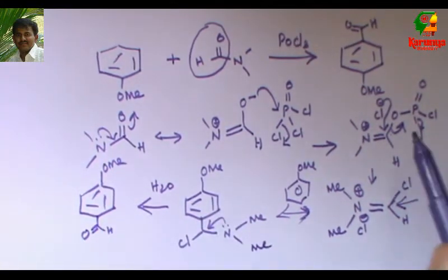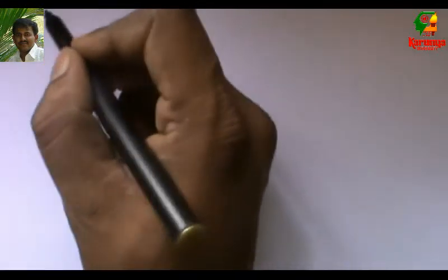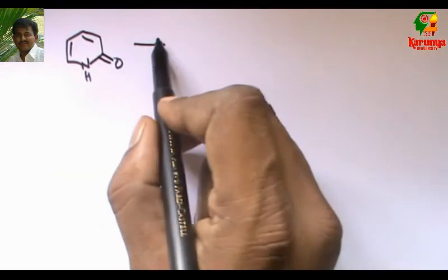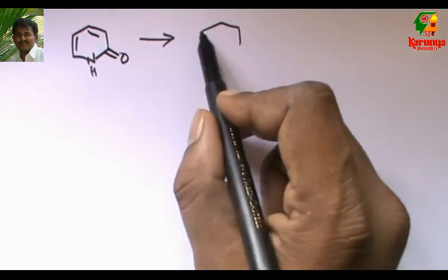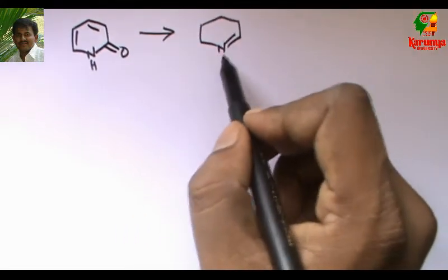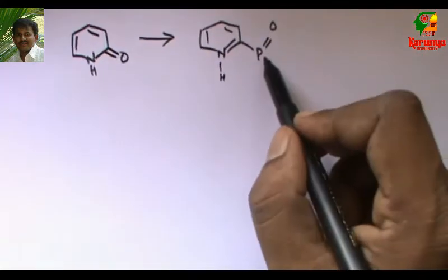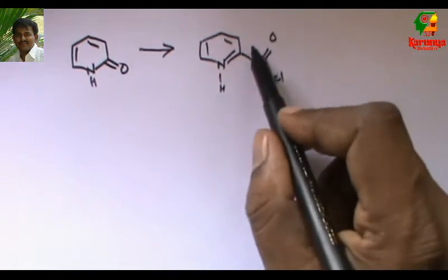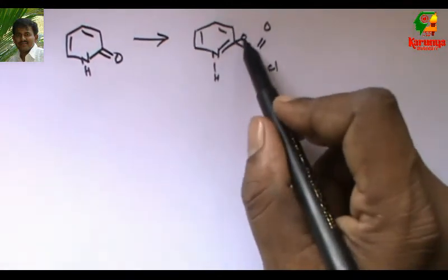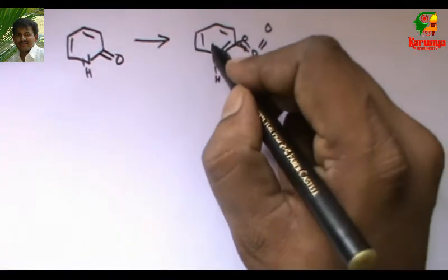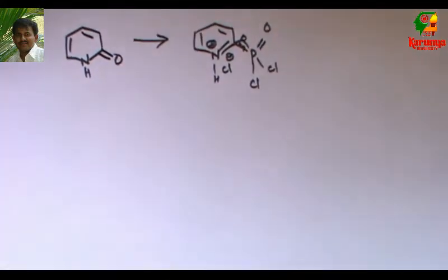The iminium is attacked by water to give the aldehyde. So the second intermediate is this iminium ion. Now let us apply the same mechanism to the given problem. This is the compound. So the oxygen attacks POCl3 to give this intermediate — here the oxygen attacks to give the first intermediate.